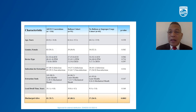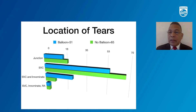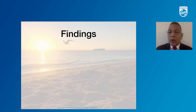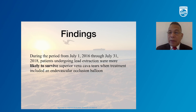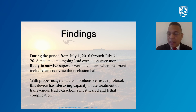The two groups were matched on age, gender, devices, indication for extraction, tools used for extraction, and the age of the leads. The only difference was the use of the balloon. The locations of the tears were similar in both groups. We concluded from our study that patients in whom balloons were used were more likely to survive, and the balloon has life-saving capabilities.